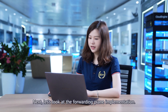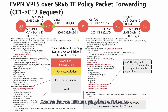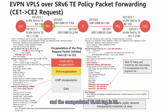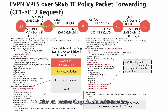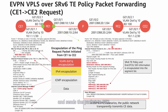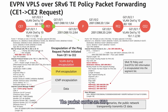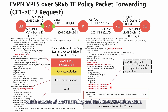Next, let's look at the forwarding plane implementation. Assume that we initiate a ping from CE1 to CE2 and obtain packet headers on the interface of PE1. We can see that ICMP encapsulation is first performed on original data, followed by IPv4 encapsulation, in which the source address is the address of CE1 and the destination address is the address of CE2. Then VLAN dot1Q encapsulation is performed with VLAN tag 10, followed by Layer 2 Ethernet encapsulation. After PE1 receives the packet, it removes the VLAN tag, performs SRv6 encapsulation for the remaining packet data, and sends the packet to PE2. The packet carries an SRH, which consists of SRv6 TE policy and End.DT2U SID information.